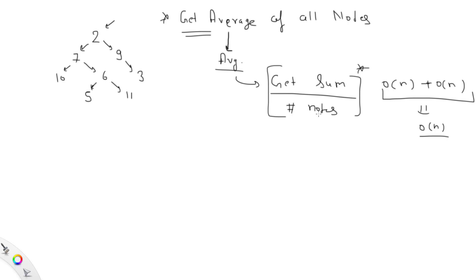Can we improve this approach? Instead of two iterations, can we calculate both sum and count in one iteration? Yes, we can. We traverse the binary tree only once — let's say in pre-order. We take two variables: sum and count, both starting at zero. Whenever we visit any node, we add its value to sum and add one to count.